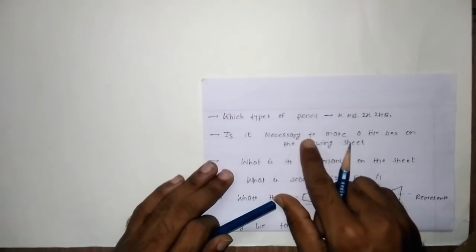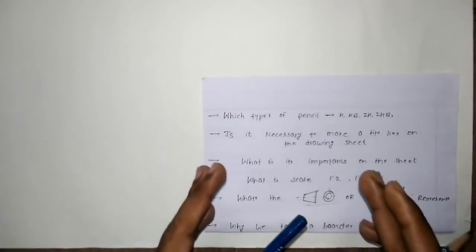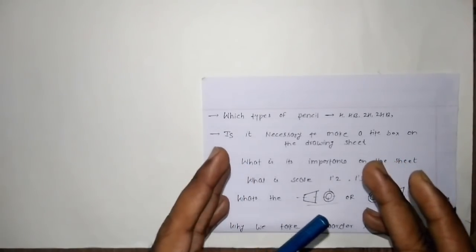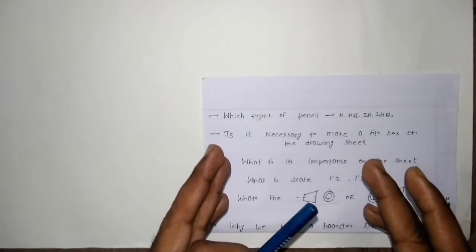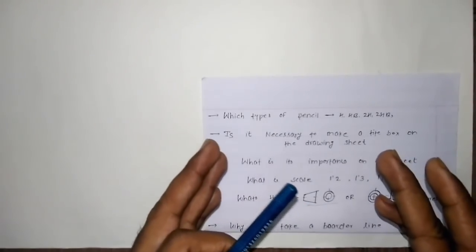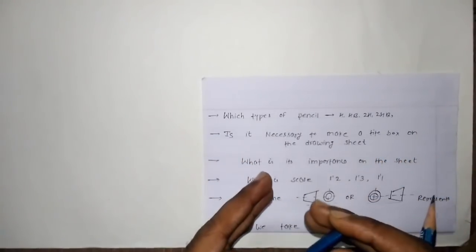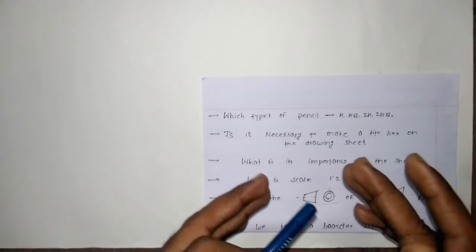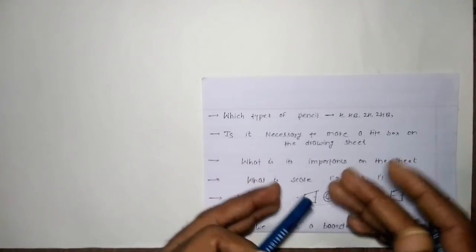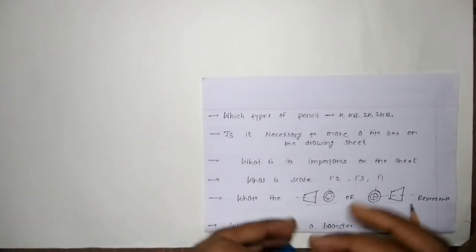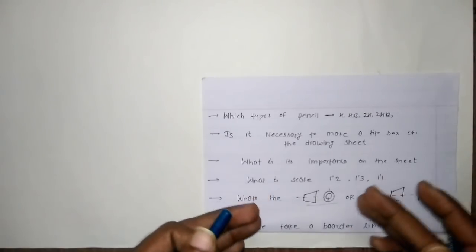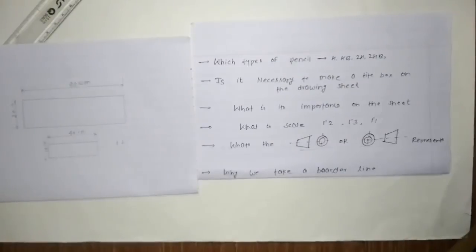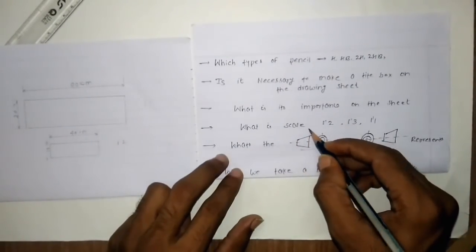It is necessary to make a title box on the drawing sheet because the title box gives information about the person who made the drawing sheet, the title of the sheet, and the subject on which the sheet is based — including the name of the sheet.